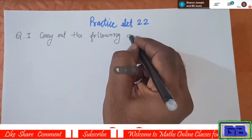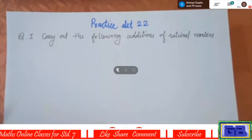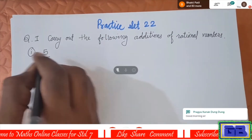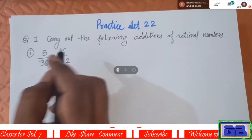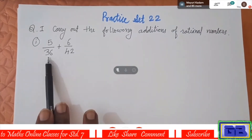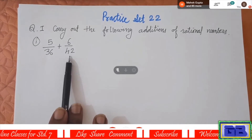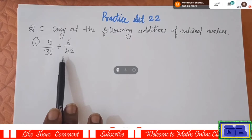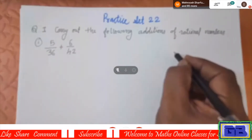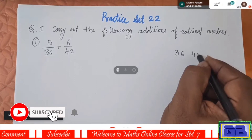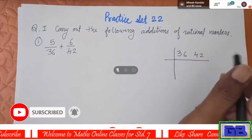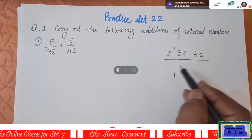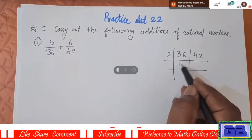Carry out the following additions of rational numbers. First one: 5 upon 36 plus 6 upon 42. We will take the LCM of these two denominators to get smaller numbers for calculation. Take the two numbers 36 and 42.